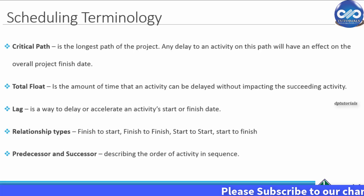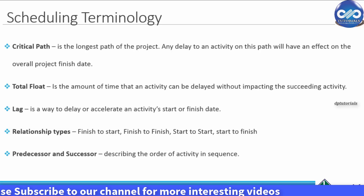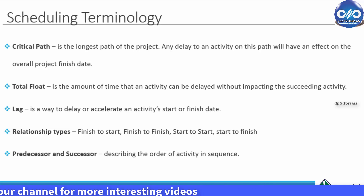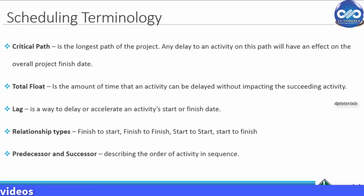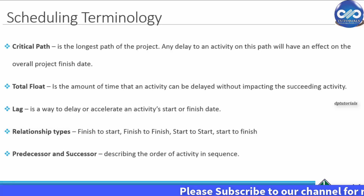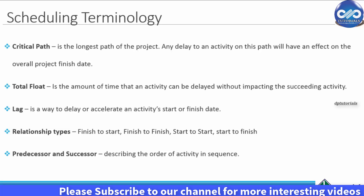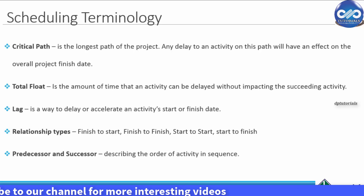Total Float: This is the amount of time that an activity can be delayed without impacting the succeeding activity. Lag: This is the duration that an activity can be delayed or accelerated. There are two types of lag — if you are delaying any activity it is called negative lag, and if you are accelerating any activity then it is called positive lag. Positive lag is for benefit and negative lag will be impacting your project duration.